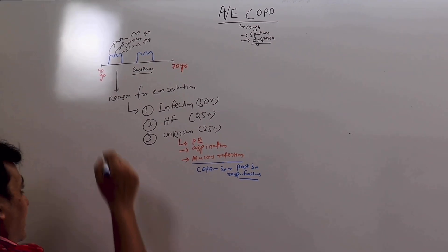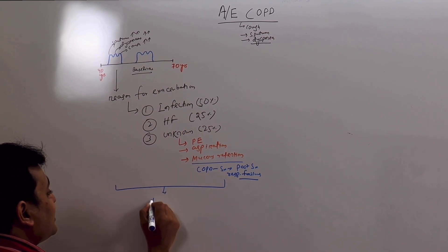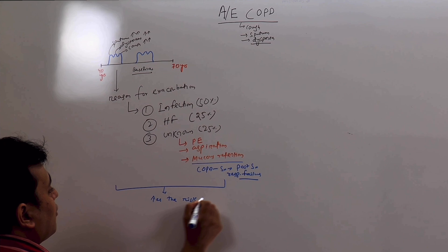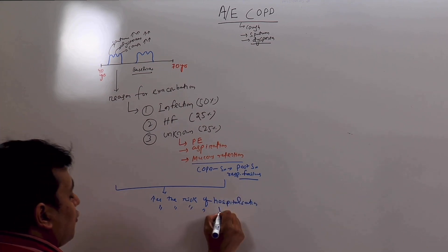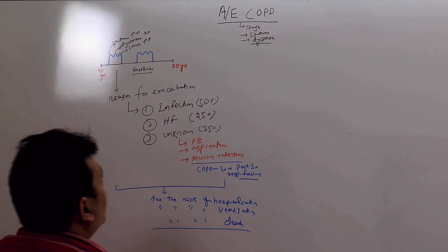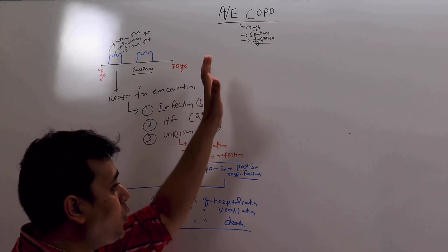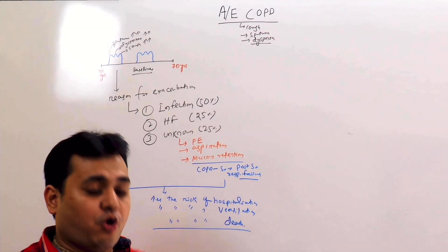So what do all these do? They do one thing - they increase the risk of hospitalization, increase the risk of ventilation, and increase the risk of death. So it is very important to understand the pathophysiology of AECOPD and how we can treat this kind of person when they are admitted in the hospital.